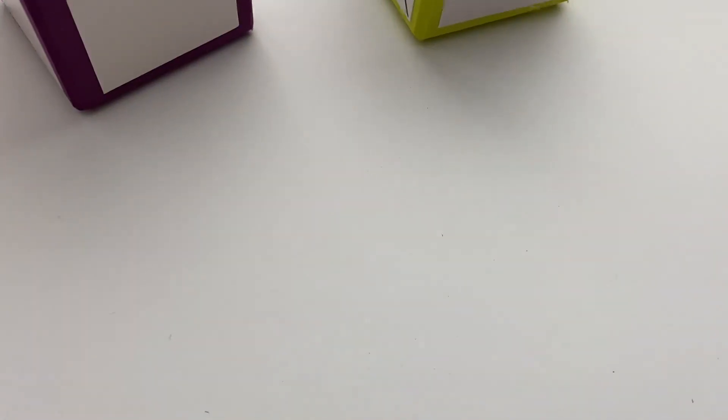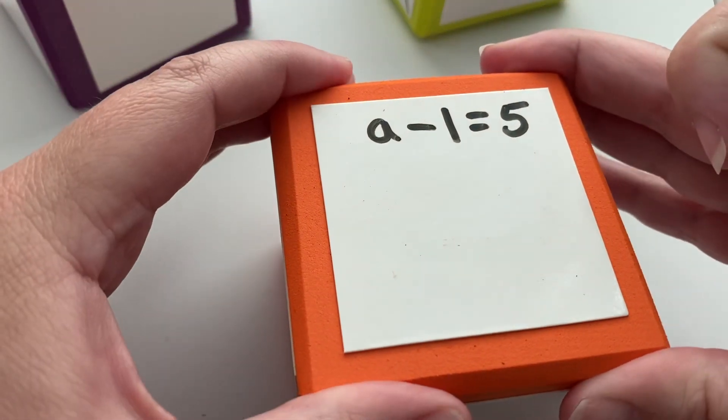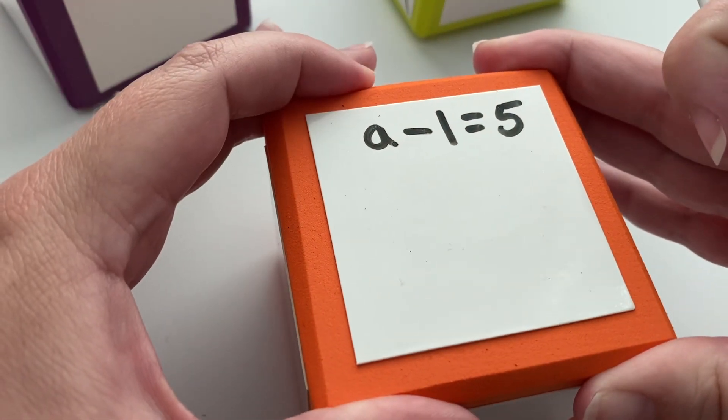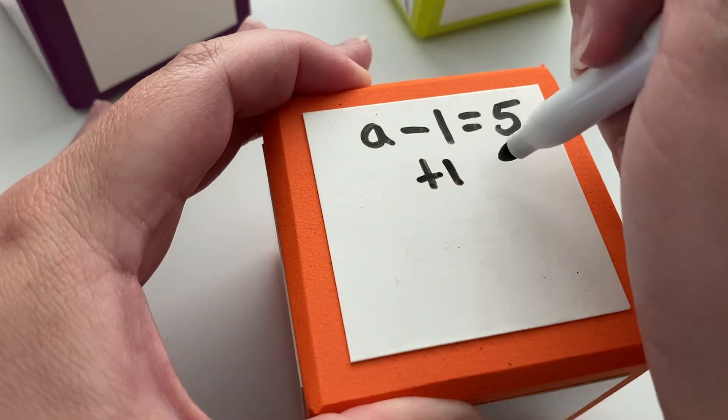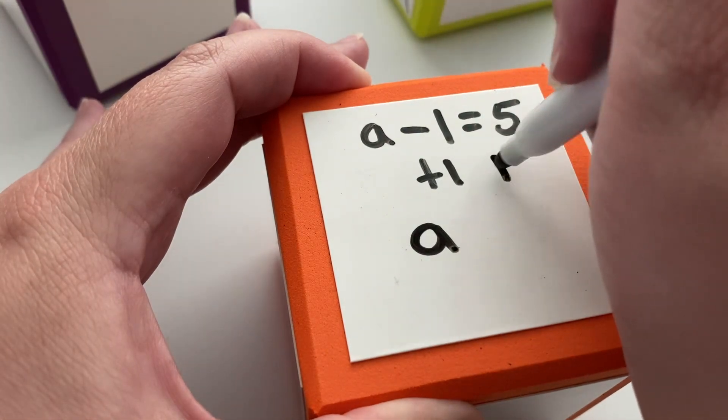Let's do a few review problems. We have different variables today. For a minus one equals five, our operation is minus one. We'll plus one to both sides, which makes that zero, leaving us with just a. We plus one here and get six on this side. So a equals six.